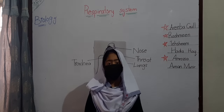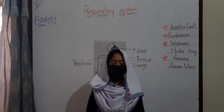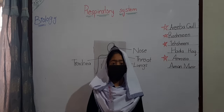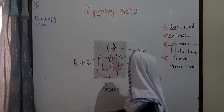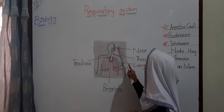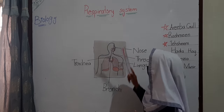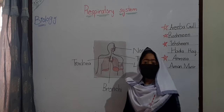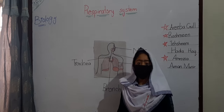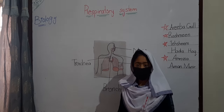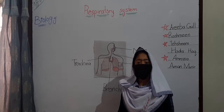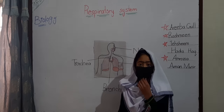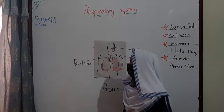Nose. Air enters our body through the nose. In the nose, hair and mucus are present. Hairs filter the air, and mucus is a sticky liquid which traps dust particles.